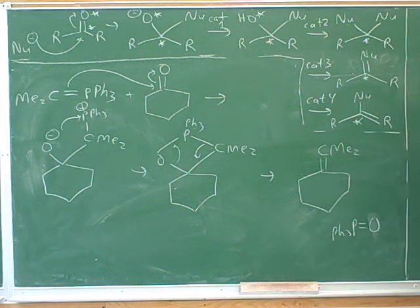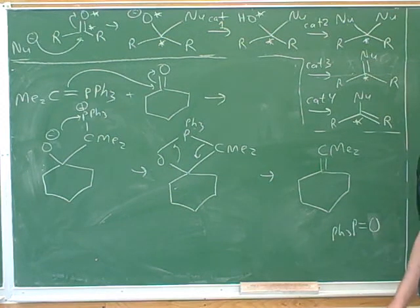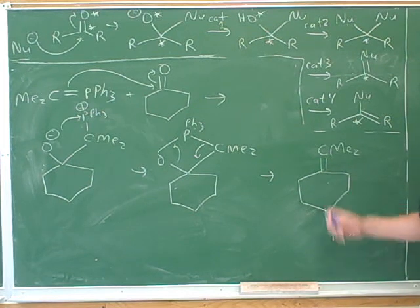What type of functional group did we produce here? Alkene? Carbine? Alkene. Carbenes are a rare compound with an incomplete octet, if I remember correctly. So this is just an alkene, a normal alkene.